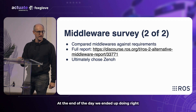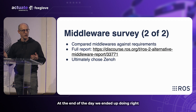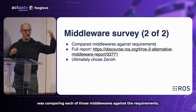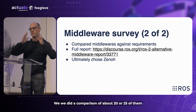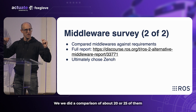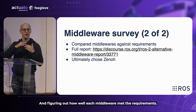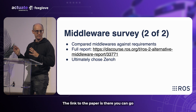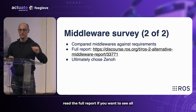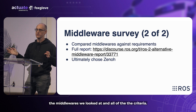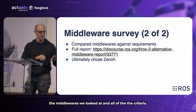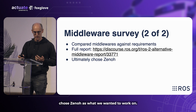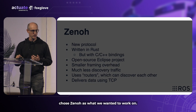At the end of the day, we compared each of those middlewares against the requirements. We did a comparison of about 20 or 25 of them, figuring out how well each middleware met the requirements. The link to the paper is available and you can read the full report to see all the middlewares we looked at and all the criteria. Ultimately, we chose Zenoh as what we wanted to work on.